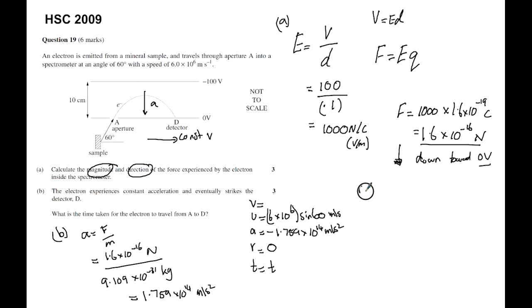And the time taken of course is what we're looking for. So I have u, a, r, and t. That gives me a formula that I know, and that is r is equal to ut plus a half at squared.